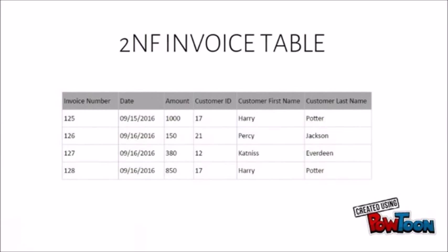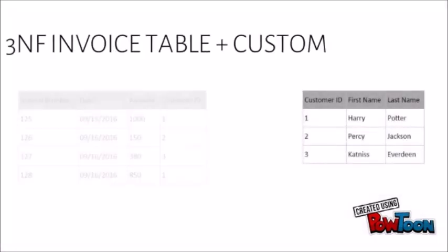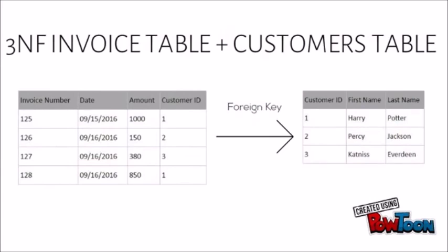In our invoice table, the invoice number determines the date, amount, customer ID, customer first name, and customer last name. The customer ID column can also determine the customer's first and last name. This is a transitive dependency, and we need to separate these columns like we did in the second normal form. We now have a customers table that links to the invoice table via the customer ID. This schema is now in the third normal form.